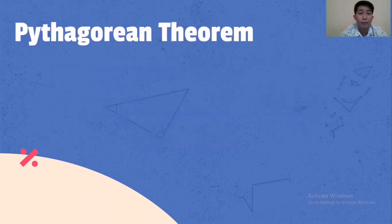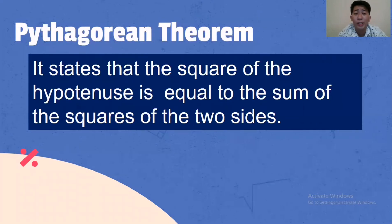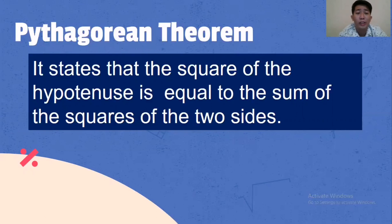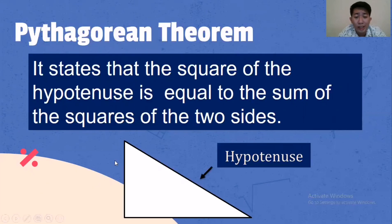Let's start. What is the Pythagorean theorem? The Pythagorean theorem states that the square of the hypotenuse is equal to the sum of the squares of the two sides. The longest side of a triangle is what we call the hypotenuse. The other sides are side A or side B — it depends upon the given.